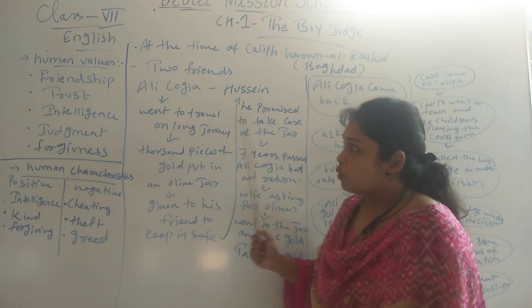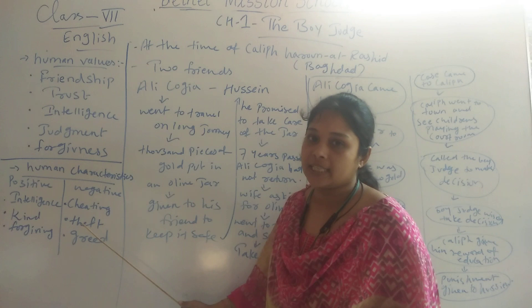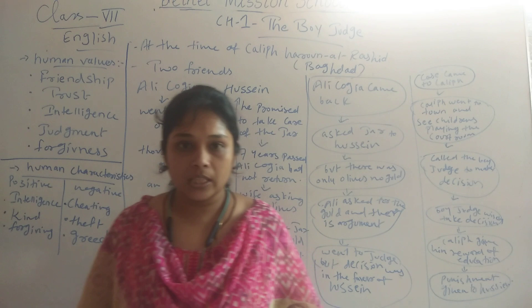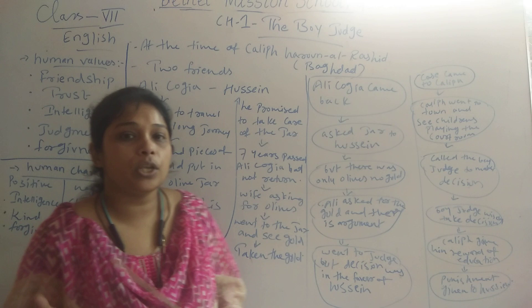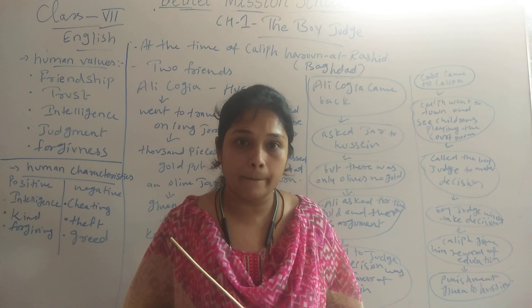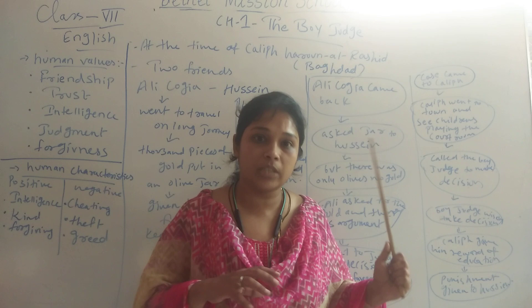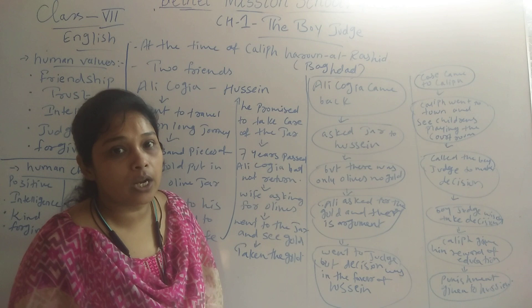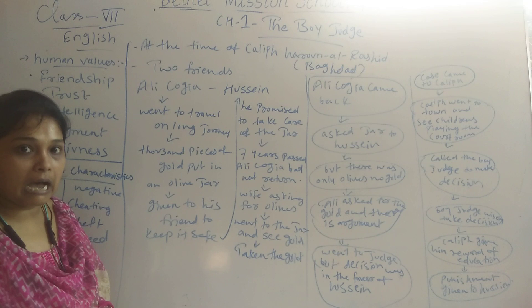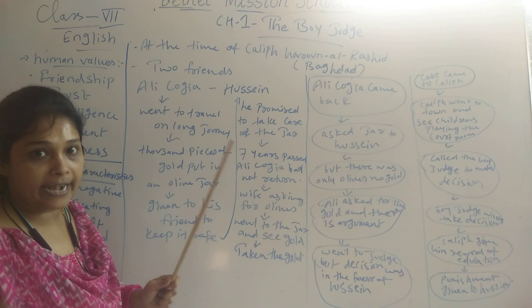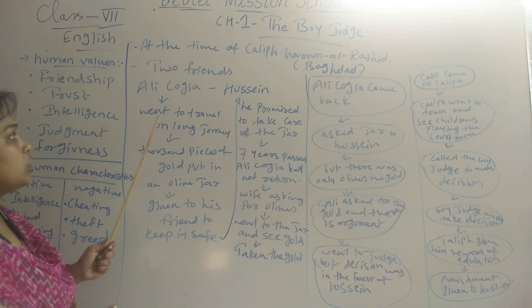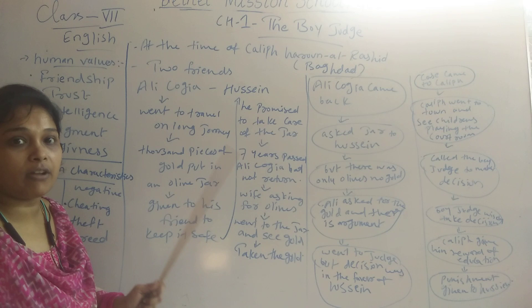As we move through the story, we will see how these values and characteristics are connected. This story is set at the time of Khalif Harun al-Rashid in Baghdad. It is about two friends — two merchants — one is Ali Khojiya and the second is Husayn. Both were very good friends and had trust in each other. One day, Ali Khojiya wanted to go on a long journey for trade reasons.